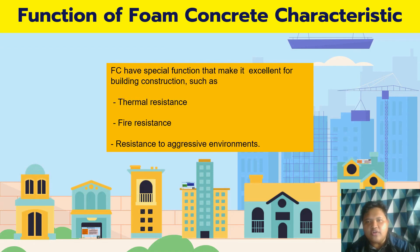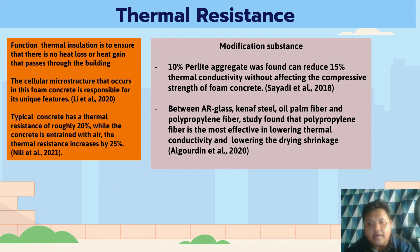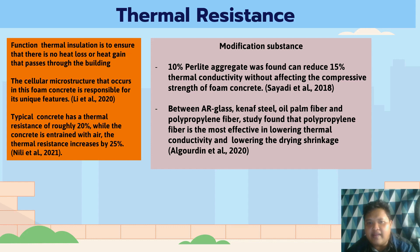Now we look at the functions of foam concrete characteristics. Foam concrete has special functions that make it excellent for building construction, such as thermal resistance, fire resistance, and resistance to aggressive environments. Thermal resistance functions to ensure there is no heat loss or heat gain, preserving the building. Ordinary concrete has thermal resistance of 20%, while foam concrete has 35%. Research also found that adding 10% perlite and polypropylene fiber helps to reduce the thermal conductivity of foam concrete.